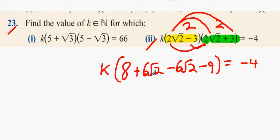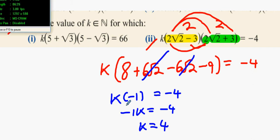What happens in the middle? What happens in the middle part? 8 take away minus 9. K multiplied by minus 1 is minus 4. Minus 1K equals minus 4. K equals 4. Pause it there. Has anybody got any questions about it?